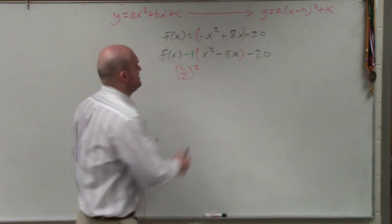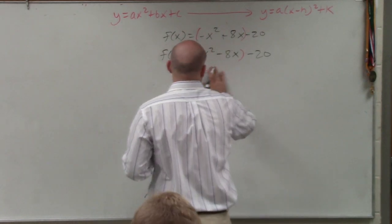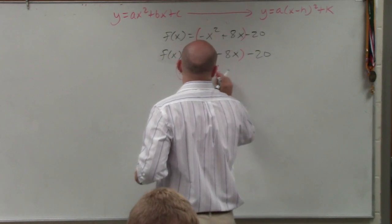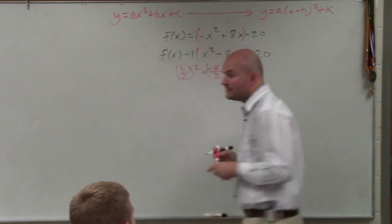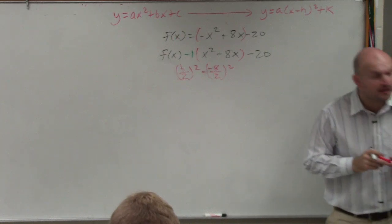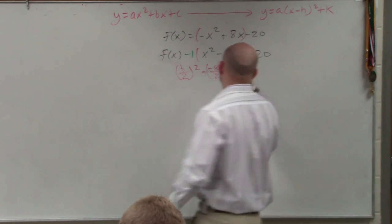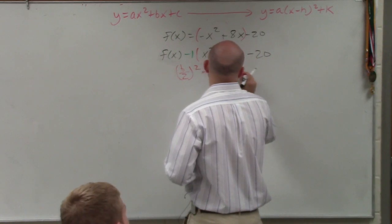So in this case, your b is going to be a negative 8. So I have negative 8 divided by 2 squared. Well, negative 8 divided by 2 is negative 4. Negative 4 squared is 16. So therefore, I have a positive 16.